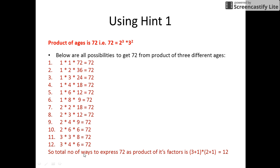So the total number of ways to express 72 as the product of its factors is (3+1) × (2+1), that is 12. So these are the 12 possible combinations in which 72 could be expressed in the product form of its factors. These 12 possible combinations also depict the possible ages of the three daughters of Shyam.